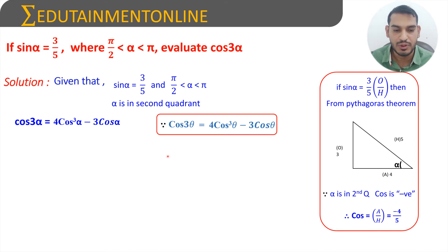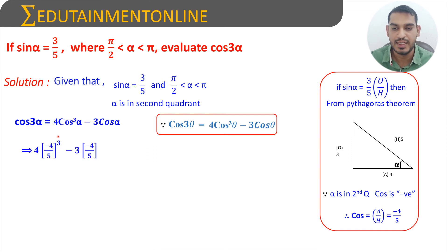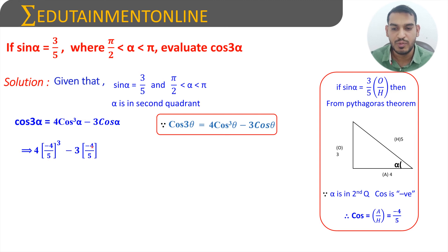Substituting the value of cos α, which is −4/5, in the formula of cos 3α, we can write it as 4 × (−4/5)³ minus 3 × (−4/5). Now (−4)³ can be written as −64 and 5³ can be written as 125, and −3 × (−4) will be +12/5.